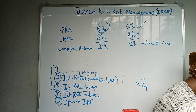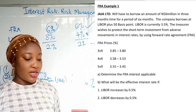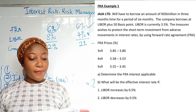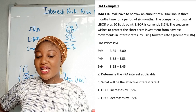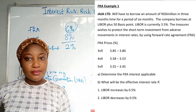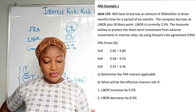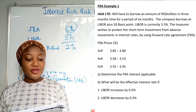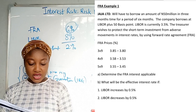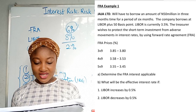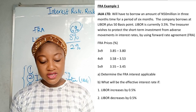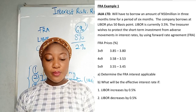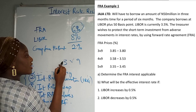Let's solve an example. Jaja Limited will have to borrow 50 million in three months time for a period of six months. The company borrows at LIBOR plus 50 basis points. LIBOR is currently 3.5 percent. The treasurer wishes to protect from adverse movement in interest rates using FRA. FRA prices given are three versus nine, four versus nine, and five versus nine. You select three versus nine because the company will borrow in three months time.